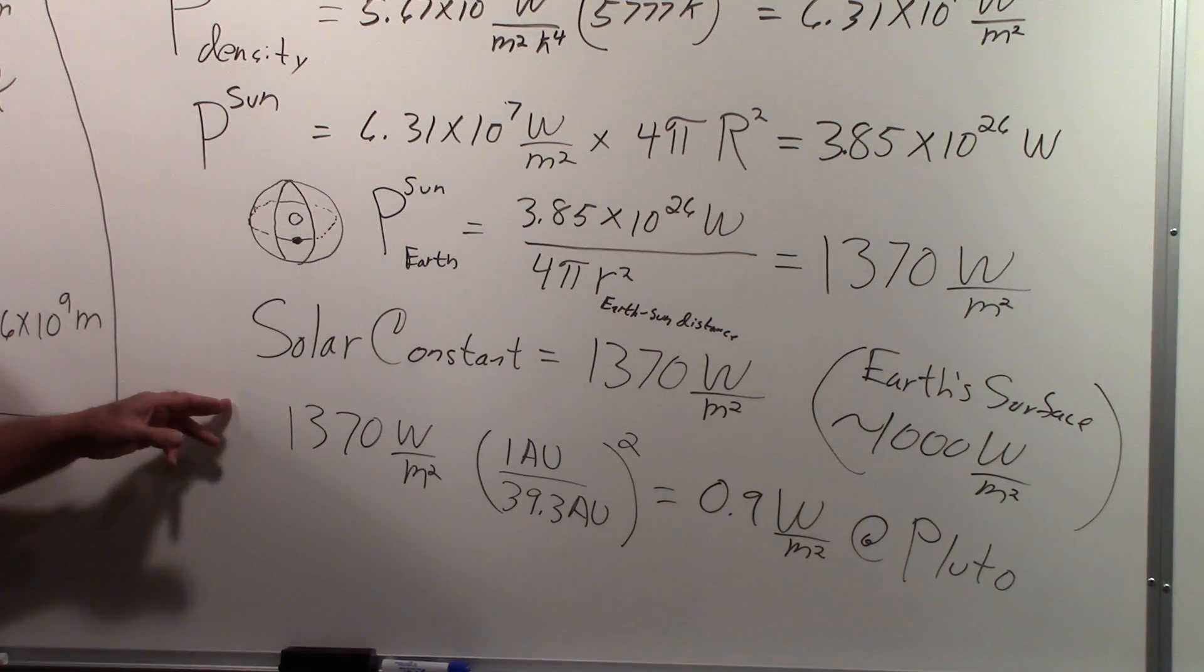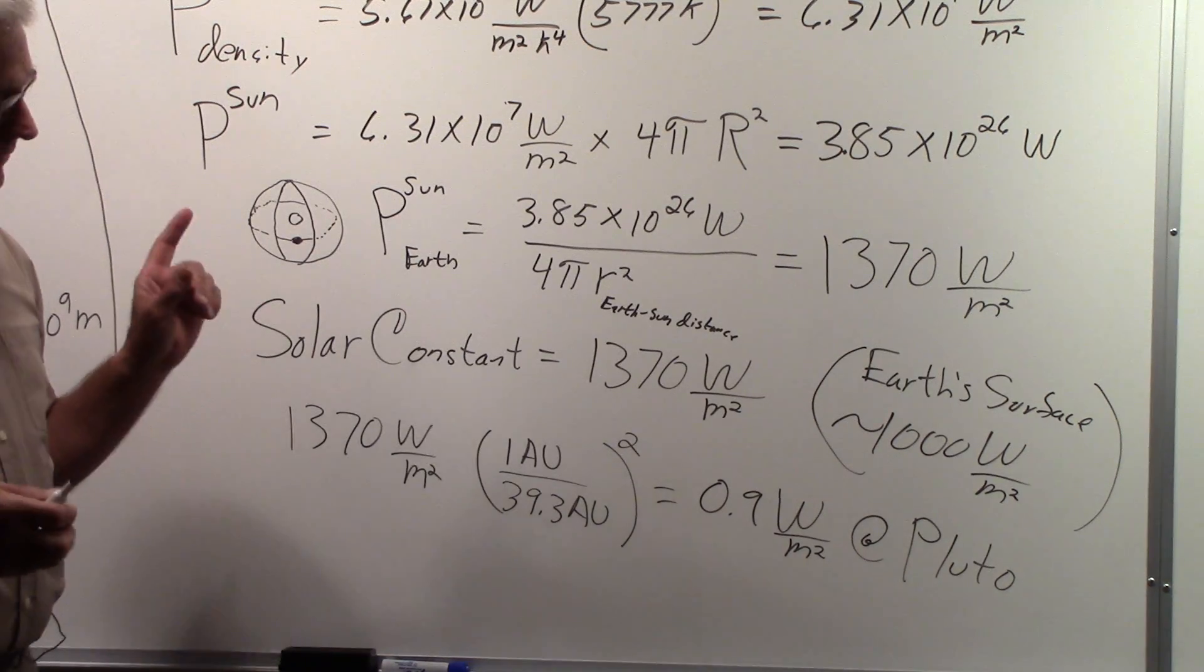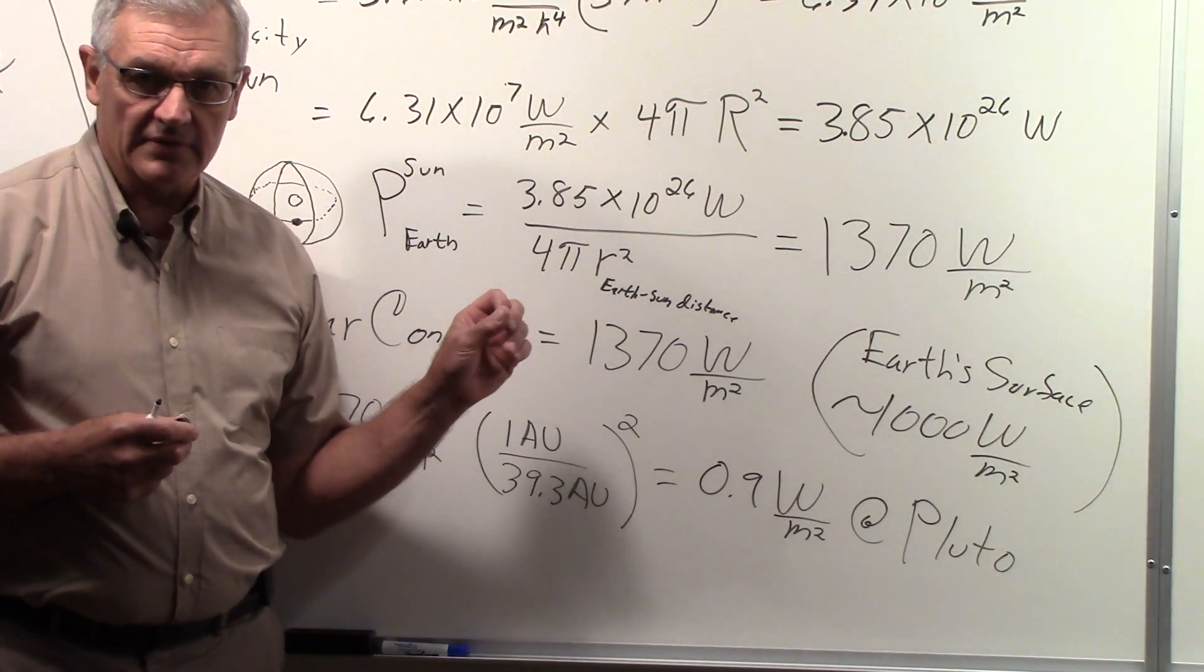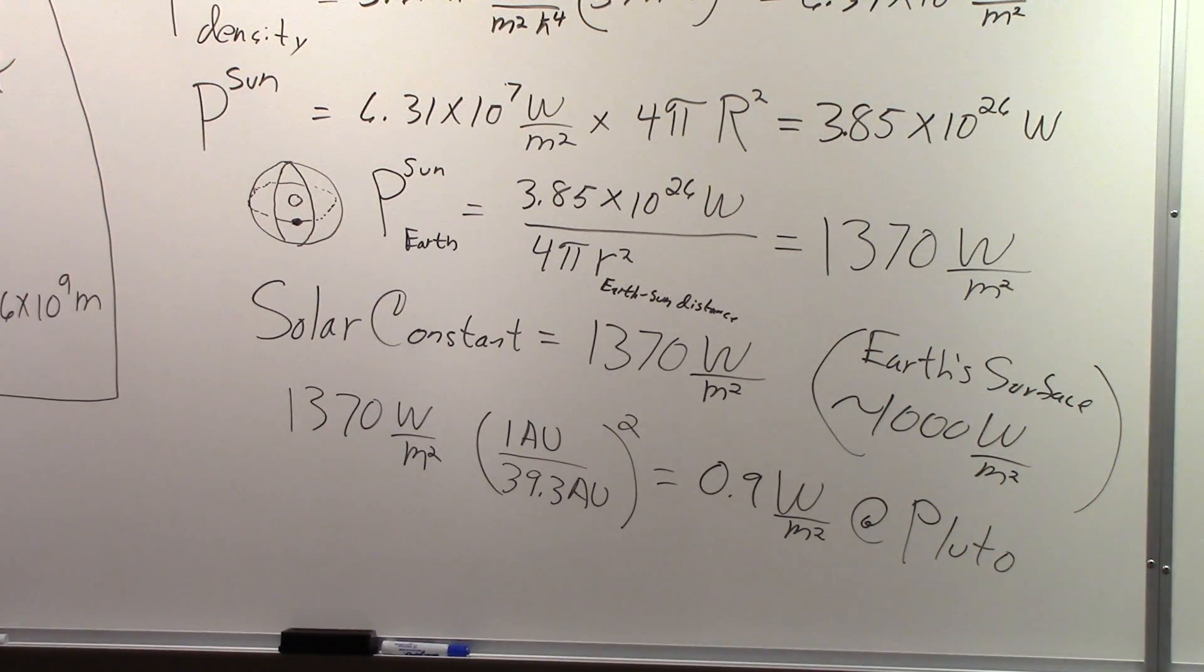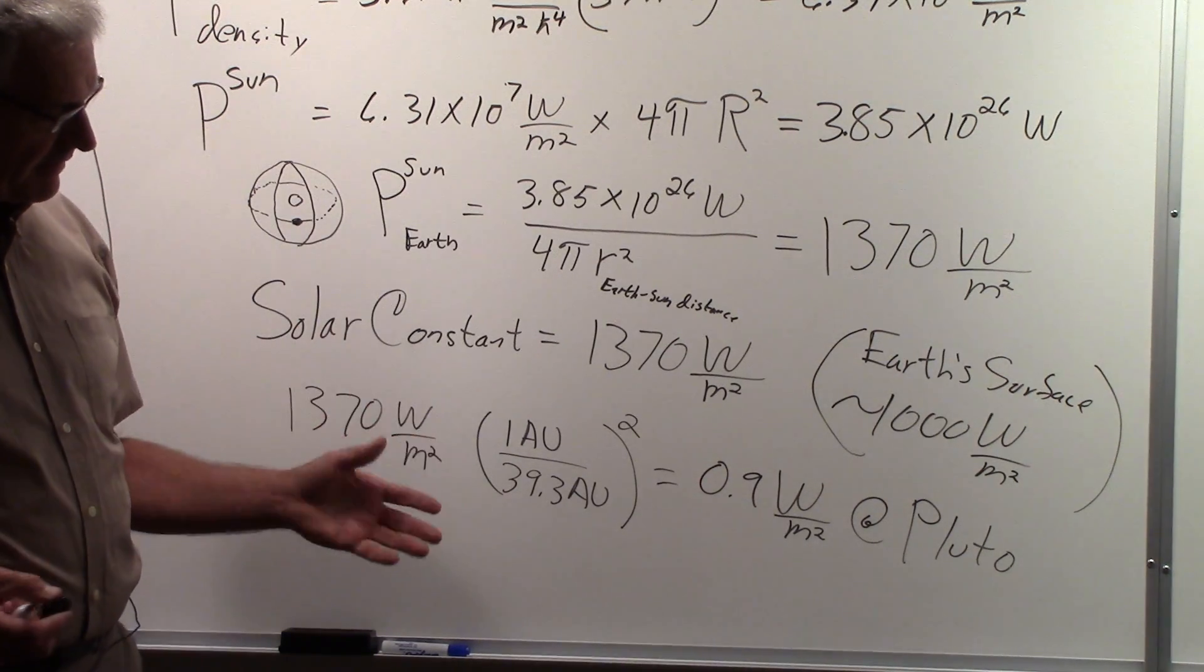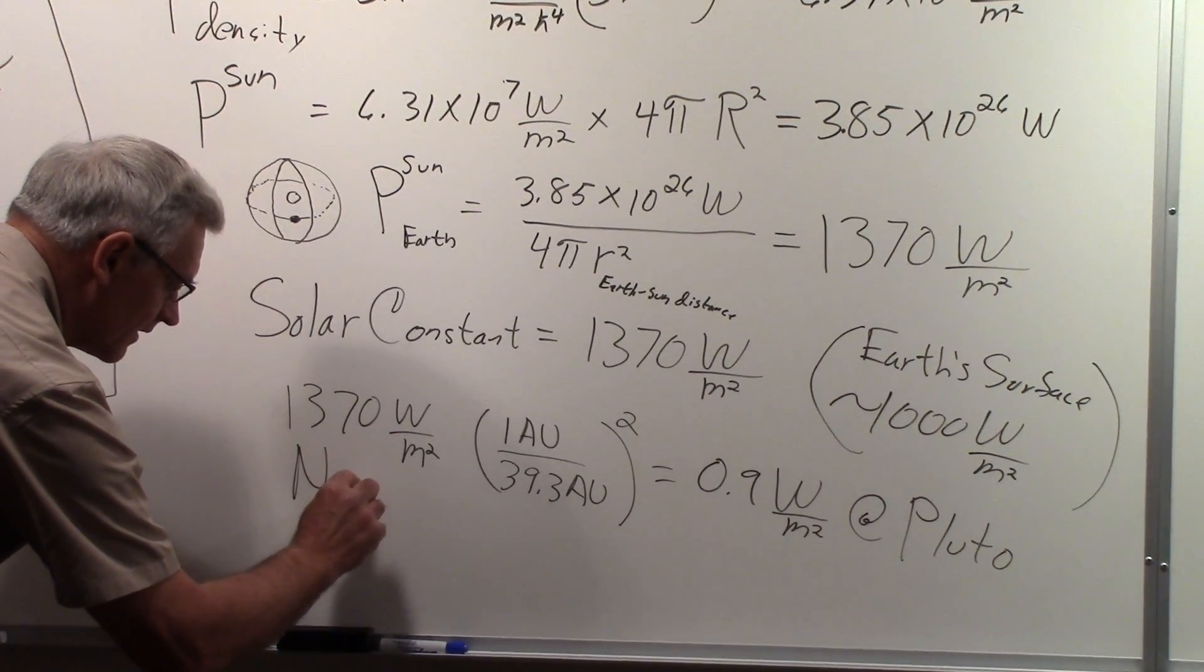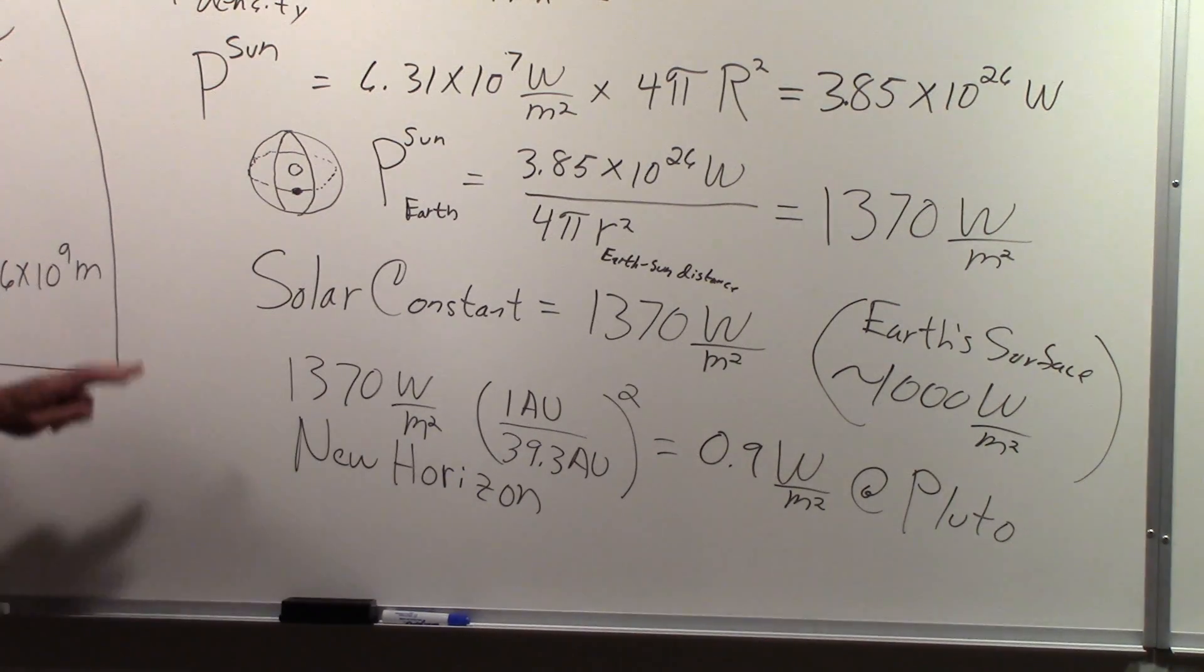And the reason I'm mentioning what the solar constant is at Pluto is because there is a spacecraft heading towards Pluto. It's the NASA New Horizons spacecraft that's going to arrive at Pluto in the summer of 2015. And unlike satellites around the earth where there's plenty of power per square meter, there isn't enough out at Pluto for that New Horizons spacecraft to generate power to run its systems.